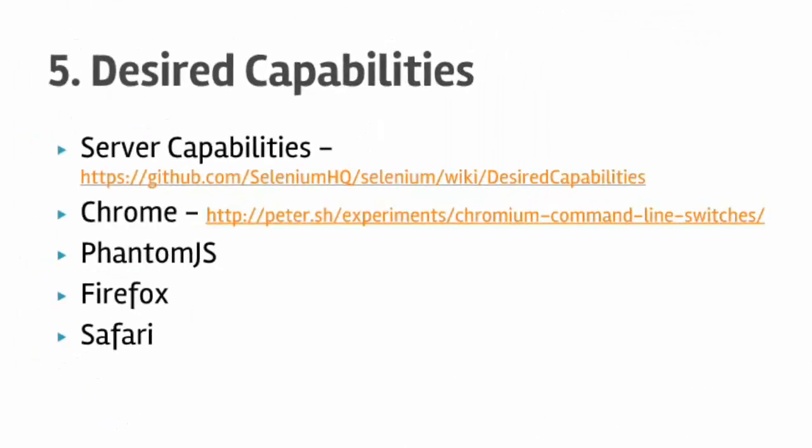Welcome to lecture number 5 on the Selenium web library in Java. In this lecture you will learn what desired capabilities are and their significance. We will start with server capabilities related to the Selenium Grid, then look at Chrome capabilities, PhantomJS capabilities, Firefox, and Safari capabilities.